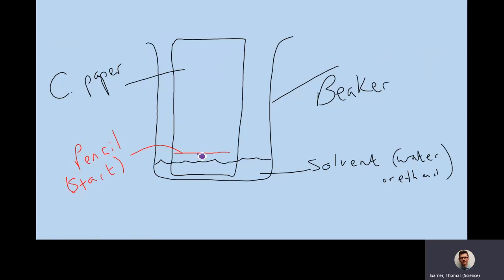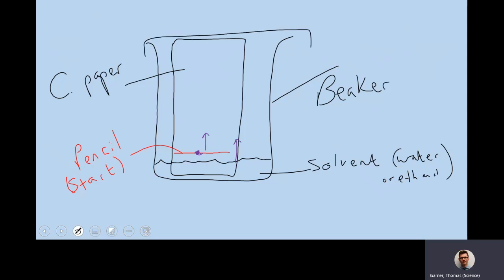On that pencil line we're going to put a dot of whatever it is we want to identify - a decent sized dot but not massive. When you dip the paper into the solvent, the solvent starts moving up as the mobile phase, and hopefully if the substance has an attraction to the mobile phase, it will start to move with it. Then you just leave it - it's quite an easy practical. If leaving it for an extended period of time, you might put a lid over the top to stop things from evaporating.